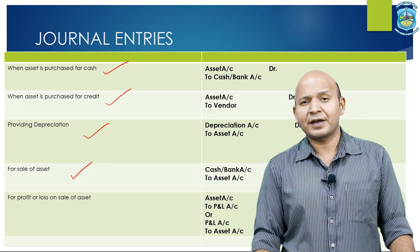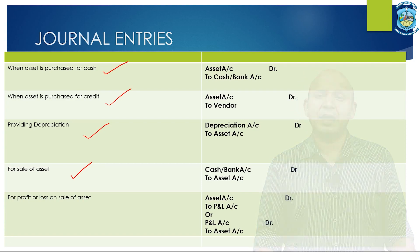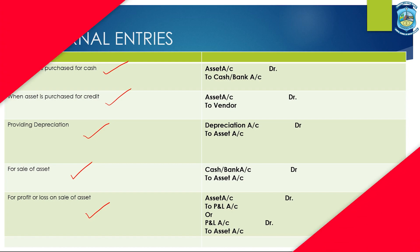In case of sale of an asset, the entry is: bank account debit or cash account debit to asset account. Whenever there is a sale of an asset, we need to calculate whether there is a profit or loss on sale. If it is a profit on sale, the entry is: asset account debit to profit and loss account. If it is a loss on sale, the entry is reversed: profit and loss account debit to asset account.